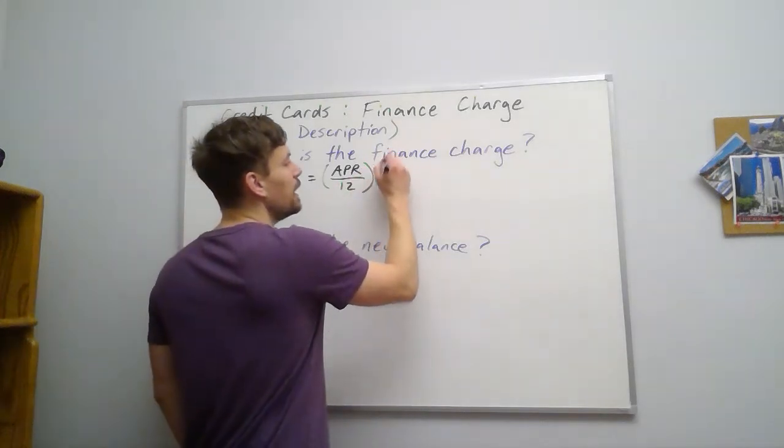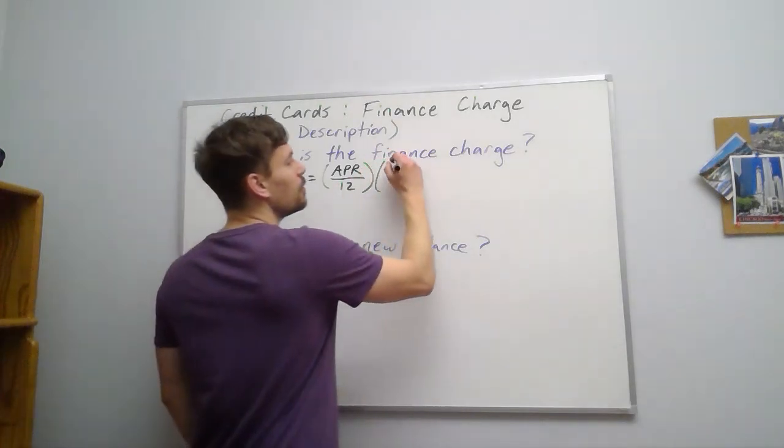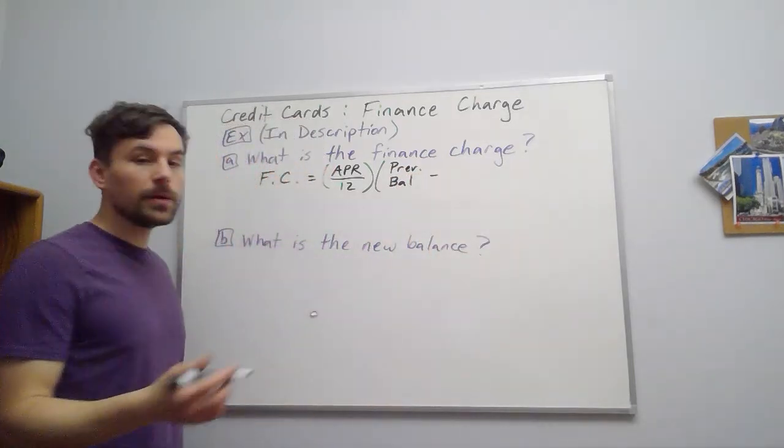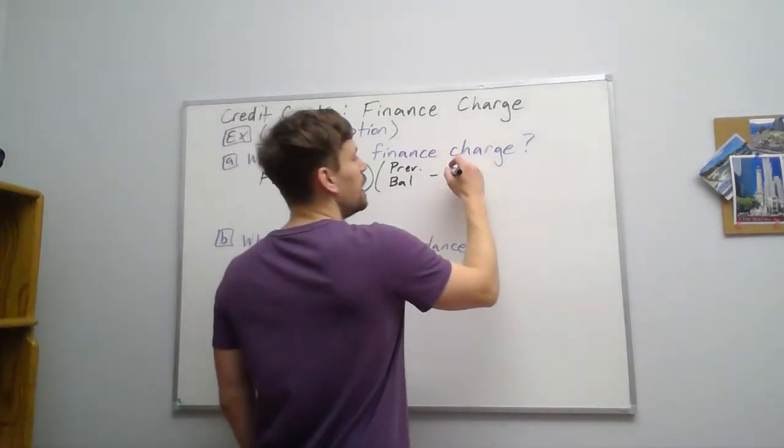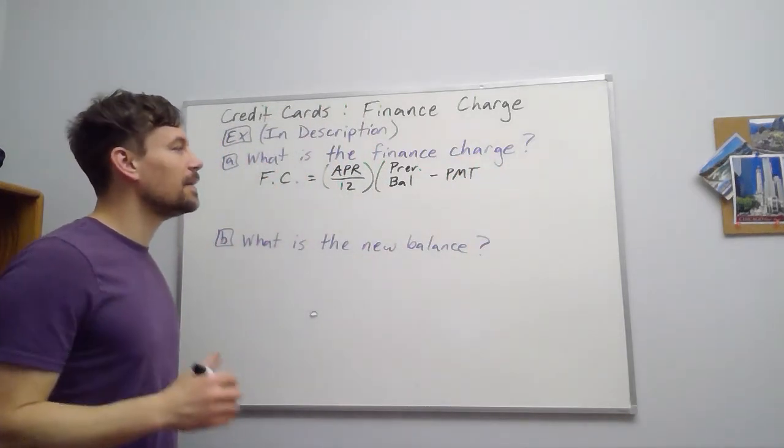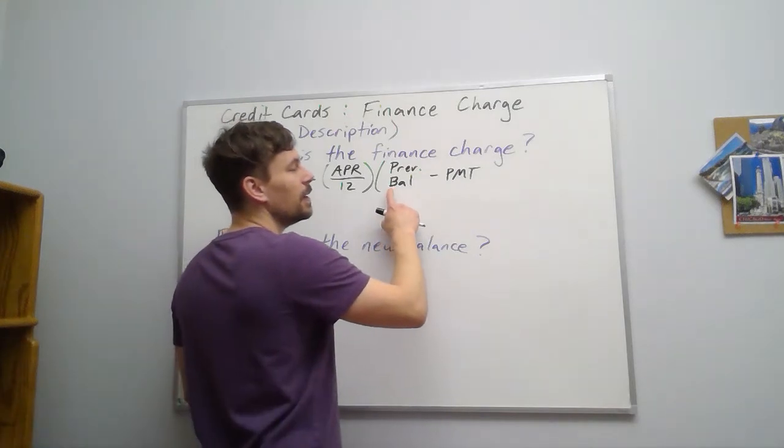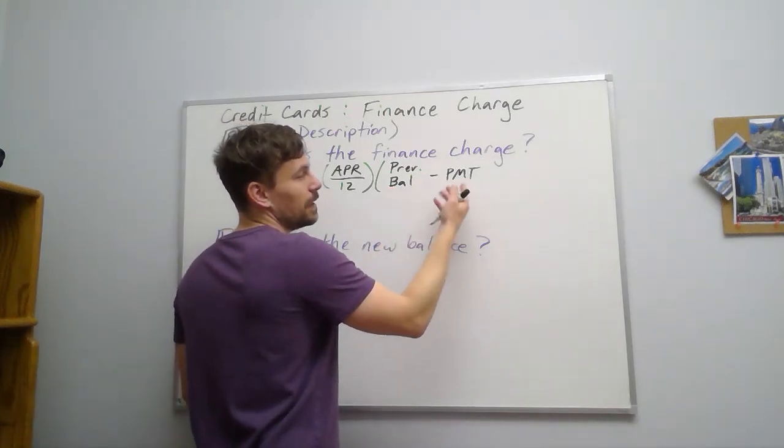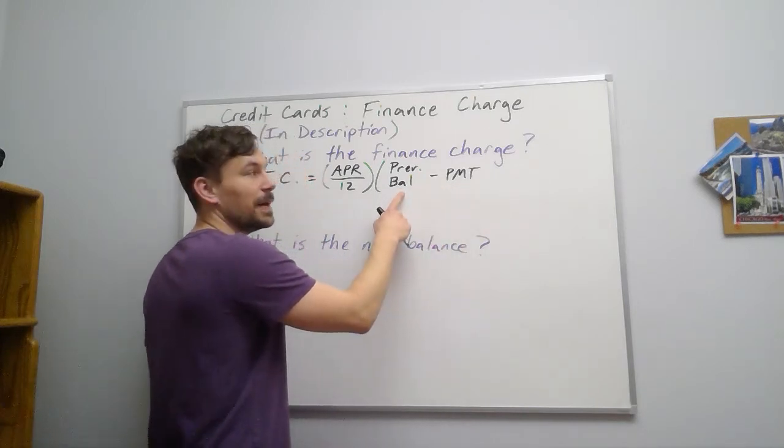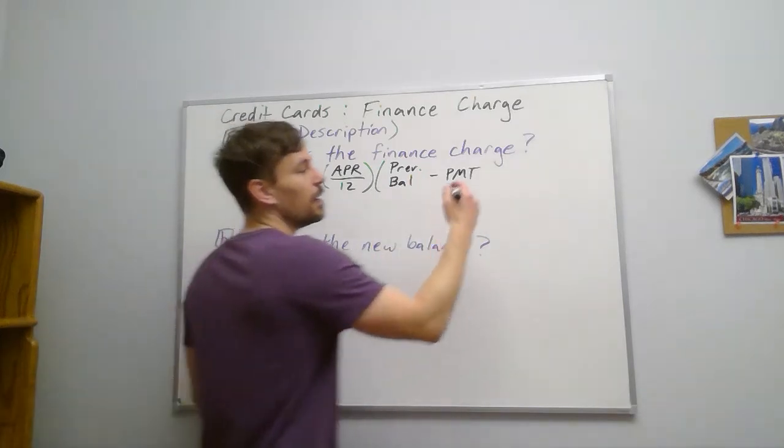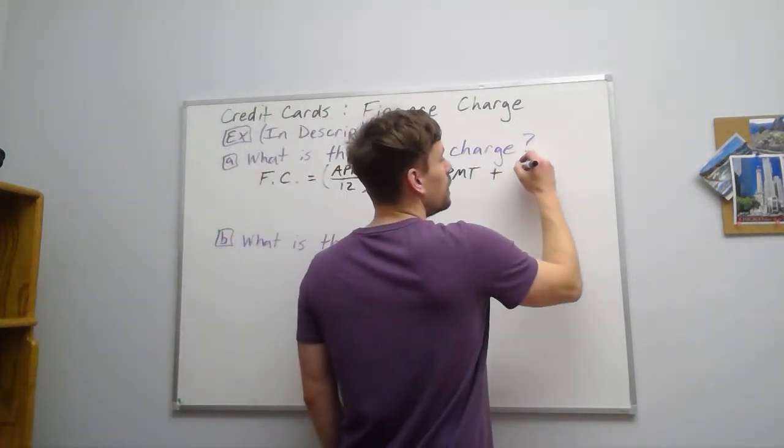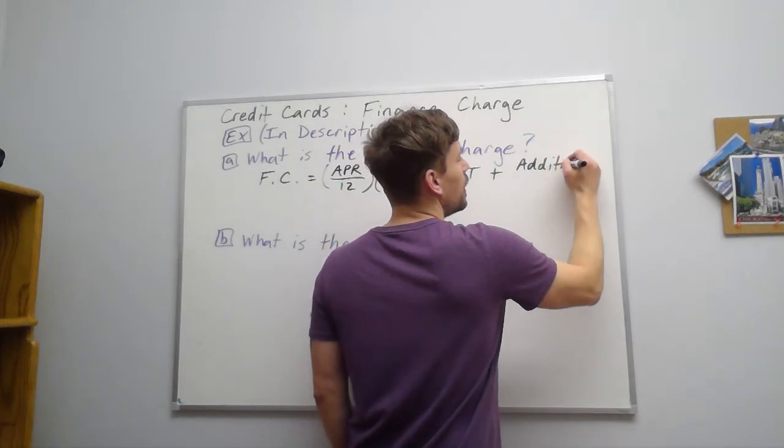here's your monthly interest rate, and then we take our previous balance and we say, did we make any payments? So subtract any payment. We're in this area where you have not paid the whole thing off, so this is going to be some positive number in the previous balance. You still owe some of that, but you might have also made additional charges, so we've got to include those as well.